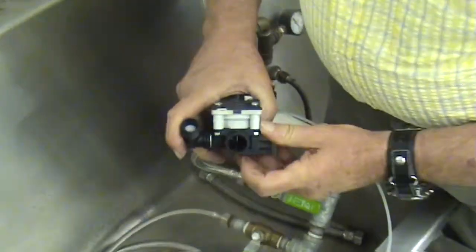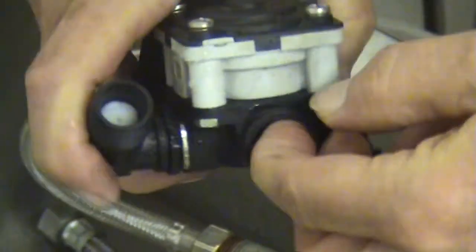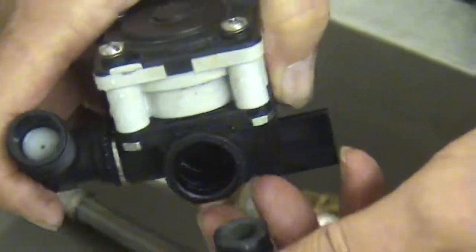We'll inspect the end of the valve. See if there are some burrs or something in there that are preventing it from sealing. And reassemble it.